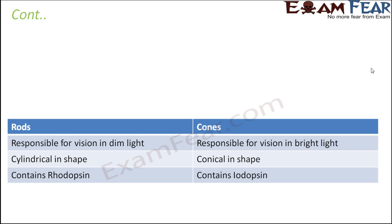Rods and cones are both photoreceptor cells present in the retina. Rods are responsible for vision in dim light, while cones are responsible for vision in bright light. This difference is due to different photopigments capable of absorbing light at different wavelengths. The photopigment in rods is rhodopsin and in cones it is iodopsin. Structurally, rods are cylindrical in shape whereas cones are conical in shape — hence the name cones.